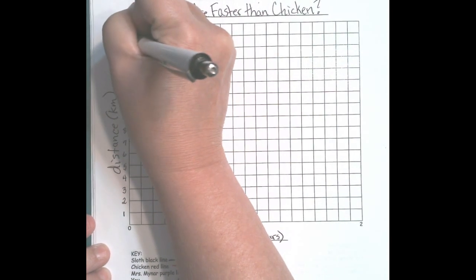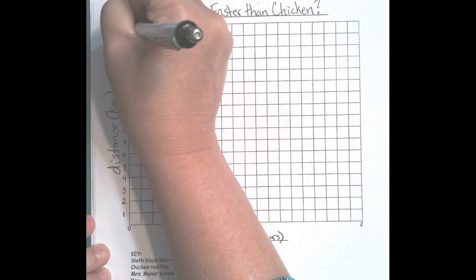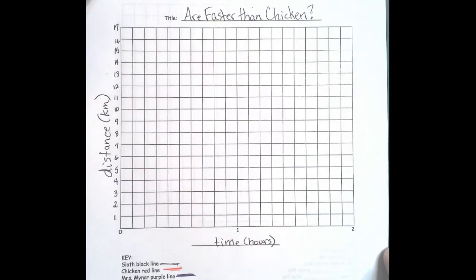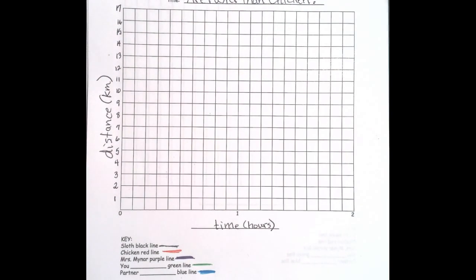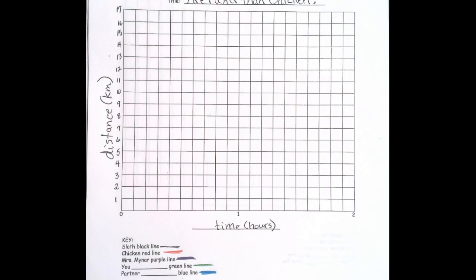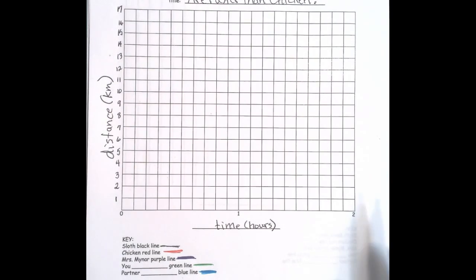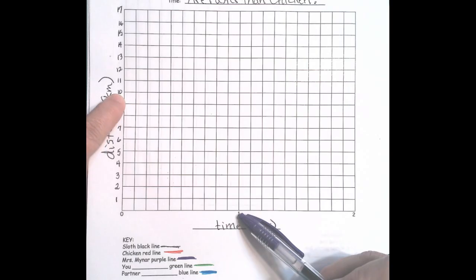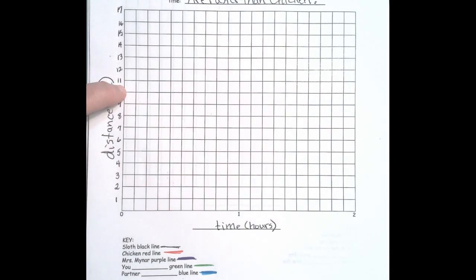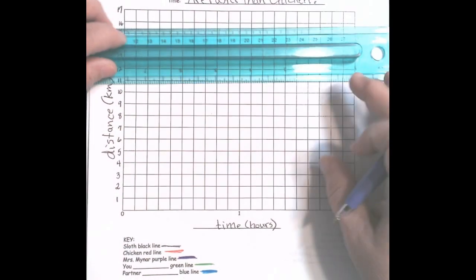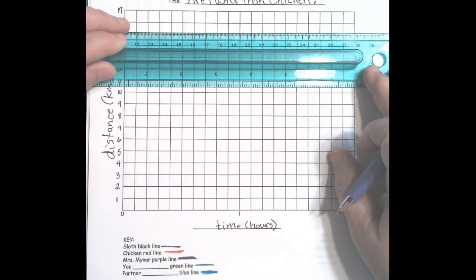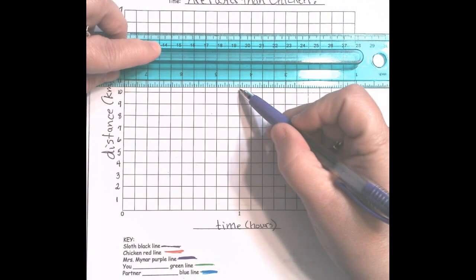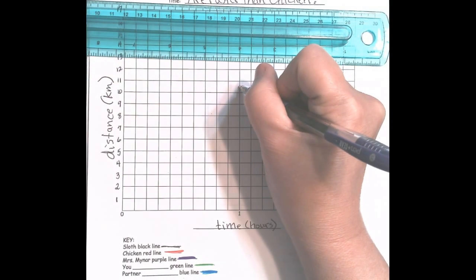You will need a ruler - there's one in each box. Now we're going to start with Miss Minor's. We're going to get the purple, and my data was 10.49 kilometers in one hour. I'm going to be at the one hour mark. I need to find where 10.49 is - here's 10, here's 11, so approximately halfway between there. I'm going to use a ruler to show me about where halfway is, and I'm going to make my data point right here.